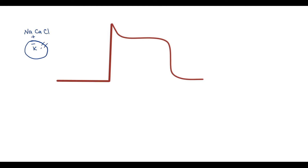This difference in ion concentration inside and outside the cell is maintained by the activity of pumps. Pumps can move ions against the concentration gradient, and because this activity goes against the concentration gradient it is an energy-consuming process. In energy-depleted states such as ischemia, the activity of pumps becomes impaired, and we can see this on ECG.